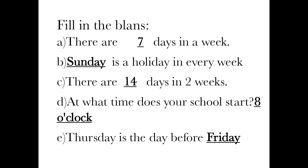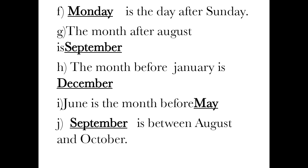Number C: there are dash days in two weeks — 14 days in two weeks. Number D: at what time does your school start? Eight o'clock. Number E: Thursday is the day before dash — Friday. And number F: dash is the day after Sunday — Monday.